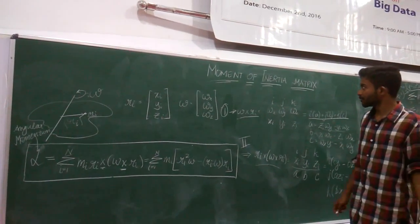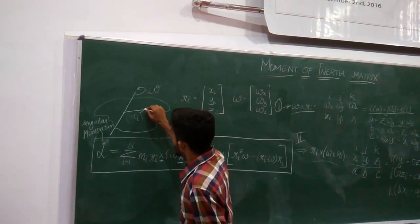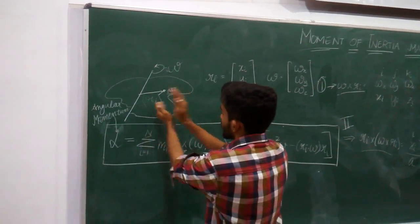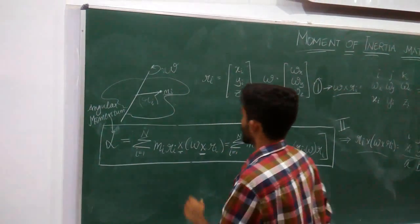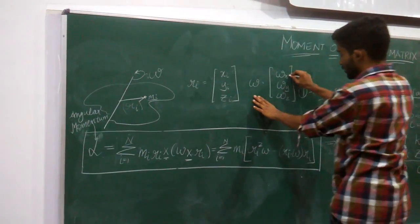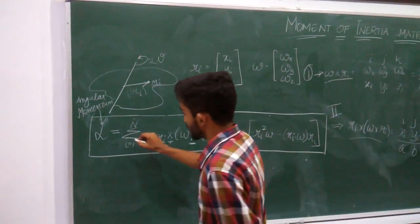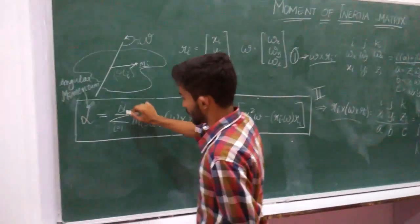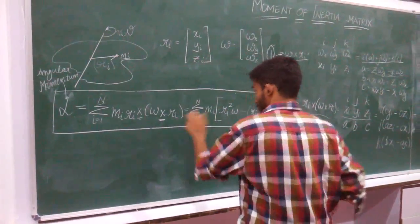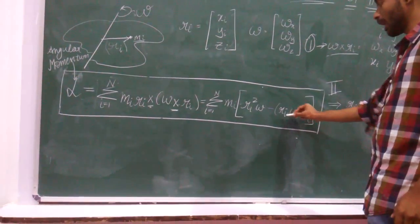Now let us derive the moment of inertia matrix. Let us take a body with a particle of mass m_i at a distance r_a, and assume this body is rotating with angular velocity ω. We write r_a as (x_i, y_i, z_i) and ω as (ω_x, ω_y, ω_z). The angular momentum of the body can be written as the summation over all particles i from 1 to n of m_i × (r_a × (ω × r_a)), which equals Σ m_i × (r_a² ω - (r_a · ω) r_a).